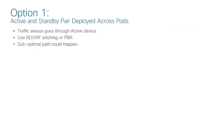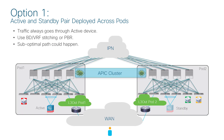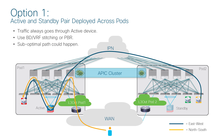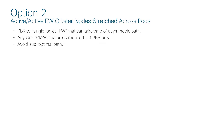Let's take a look at each option. The first option is active-standby across pods. Traffic always goes to the active device, so there's no issue with asymmetric flow. Either traditional VLAN/VRF stitching or PBR can be used. However, traffic hair-pinning across pods could happen. For example, even if traffic is between endpoints within pod 2, traffic always goes to the active device in pod 1 and then comes back to pod 2.